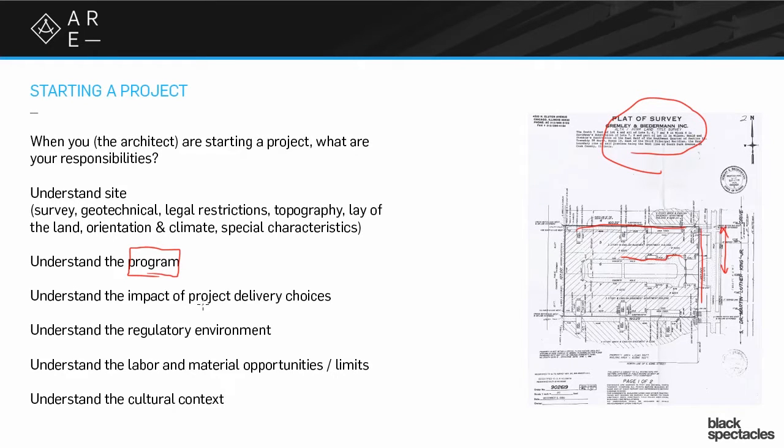Another important thing is the idea of project delivery. This is one of those key early decision-making elements that has a tremendous impact on a number of other elements. For example, I'm going to have very different contracts if I have a design-bid-build project delivery versus design-build. Those are two very different ways of doing a project, so I'm going to have different contracts, different schedules, and even different documents, because the relationship in a full bid set is different than when design and building are happening at the same time or overlapping.